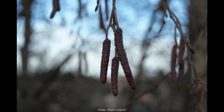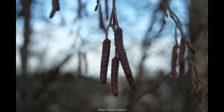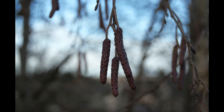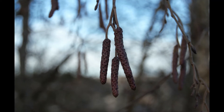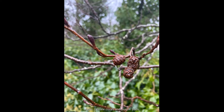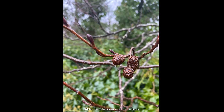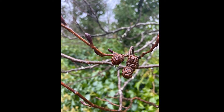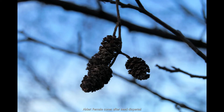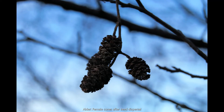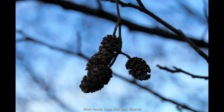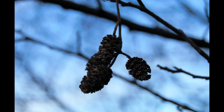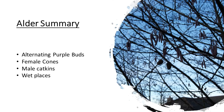Alder has male and female flowers on the same tree that are both visible in winter. The male flowers, called catkins, are slender and purplish like their buds. The female flowers, called cones, start green and turn brown in winter. Alder is the only broadleaf tree that has these seeding cones.